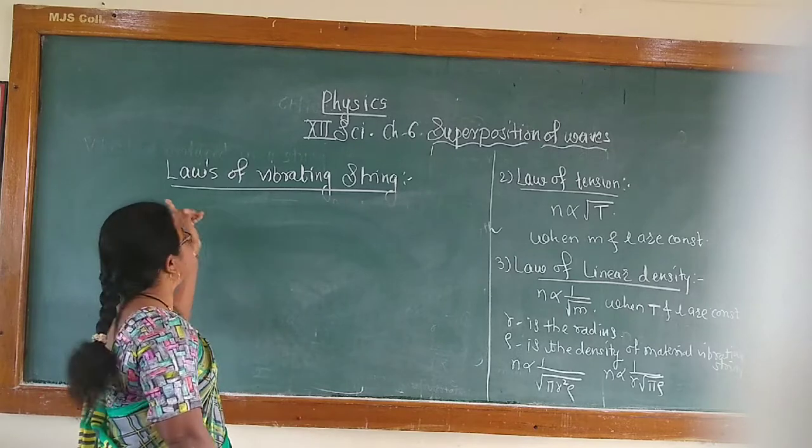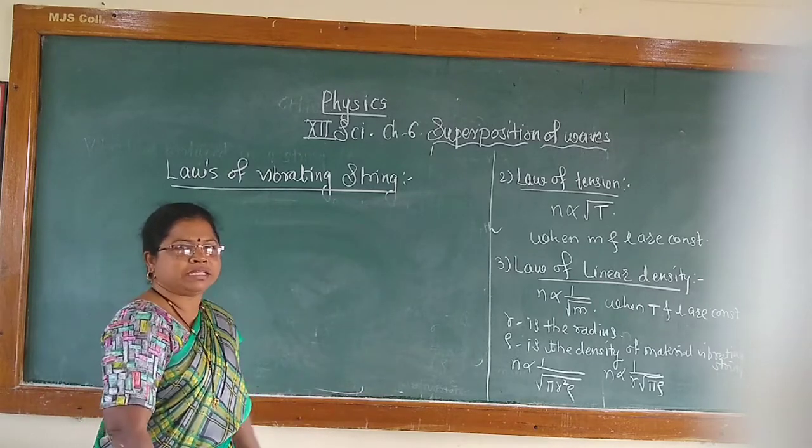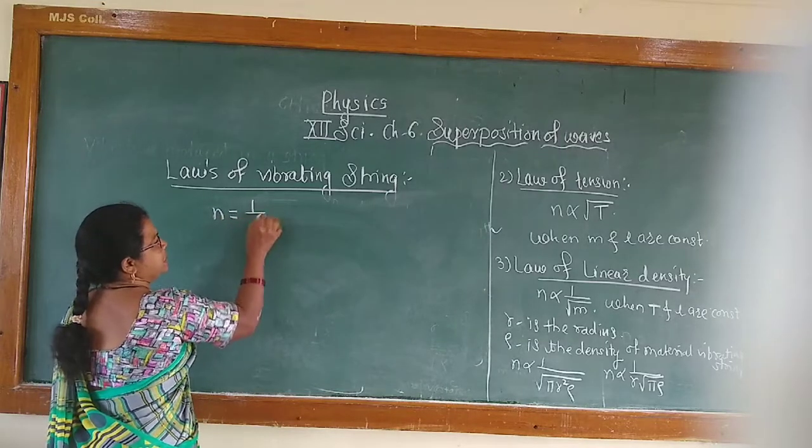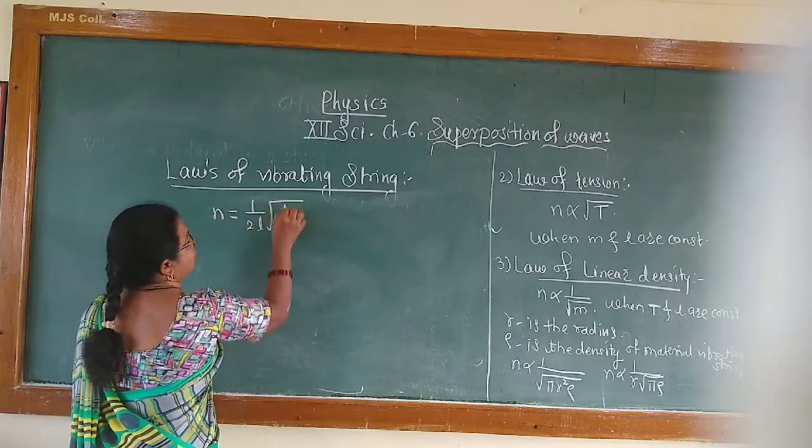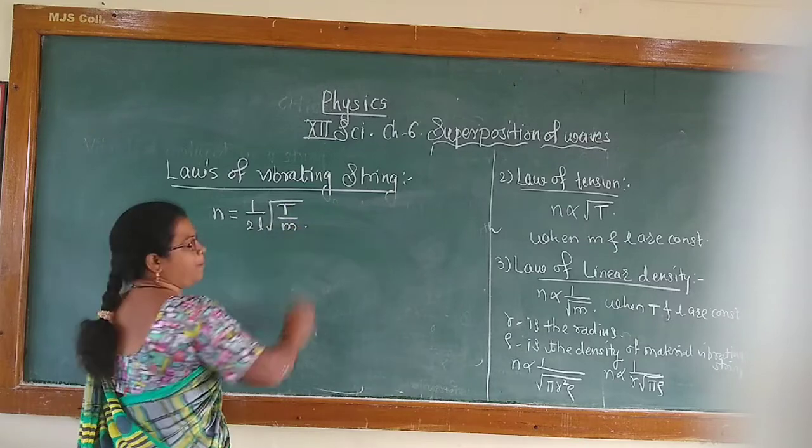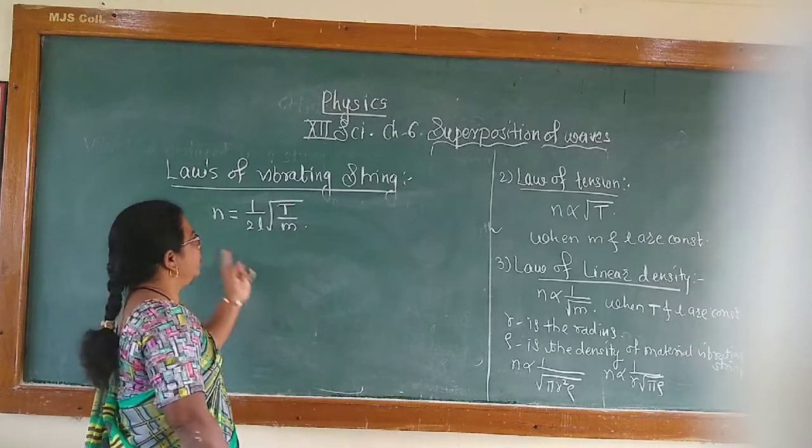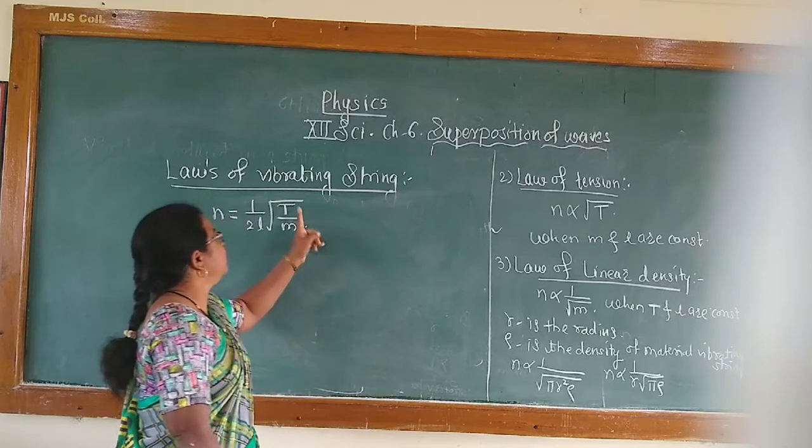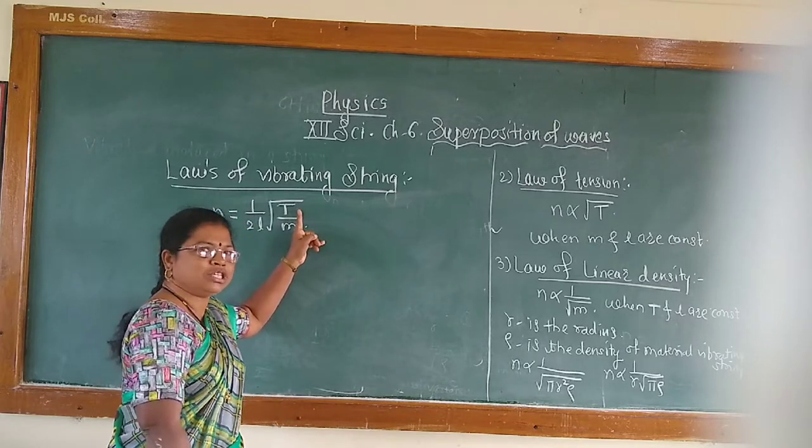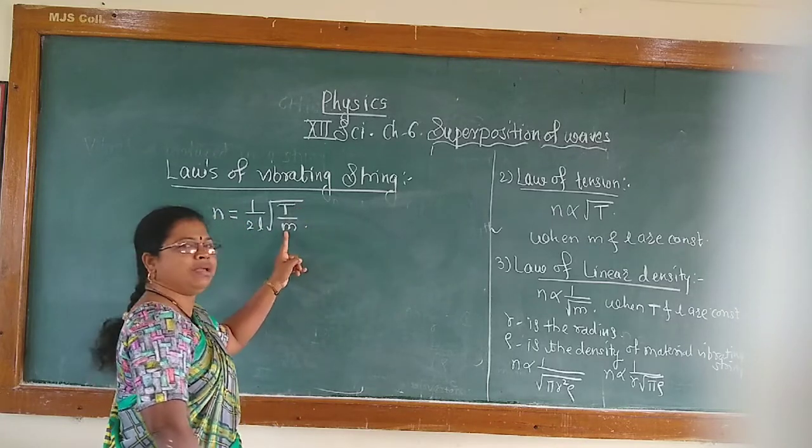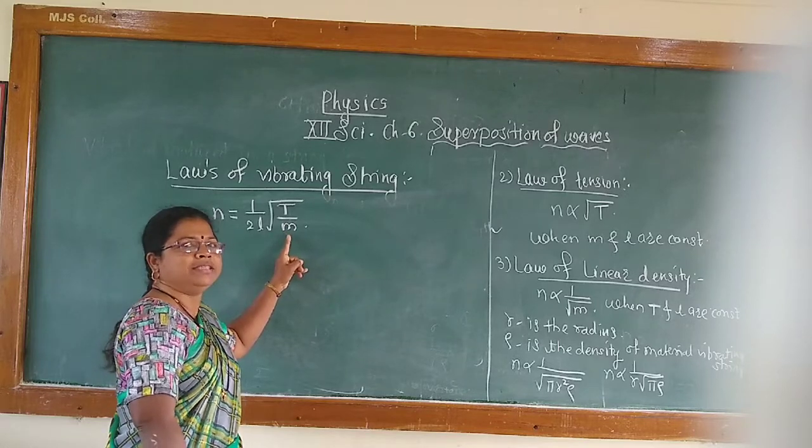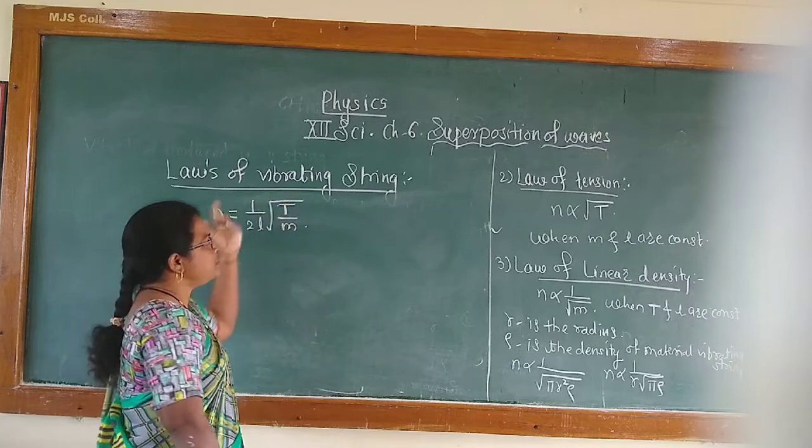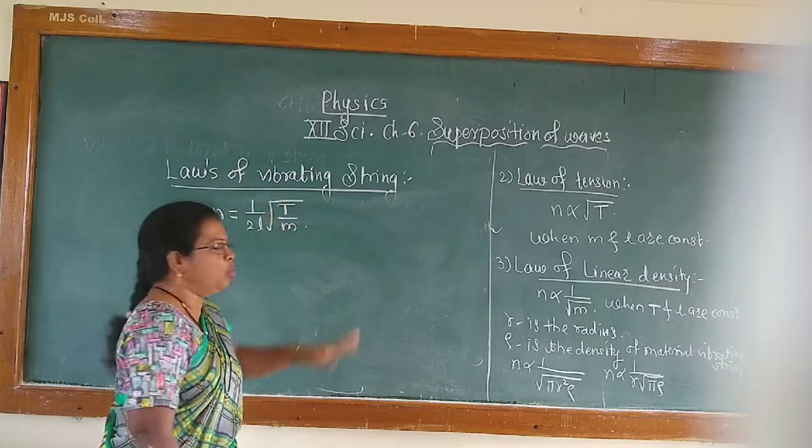Now, the next point is laws of vibrating string. We know that frequency of vibrating string is given by 1 upon 2L under root T by M, where small L is the length of the string, capital T is the tension given to the string, and M is the linear density, that is mass per unit length.